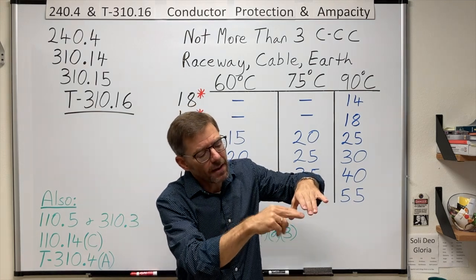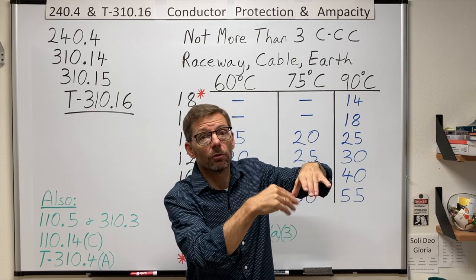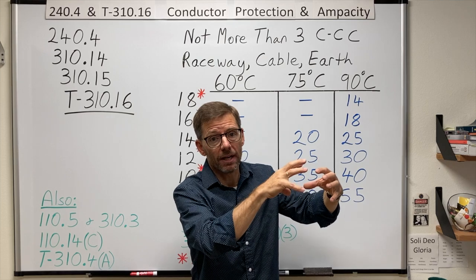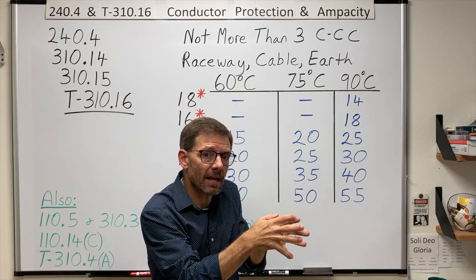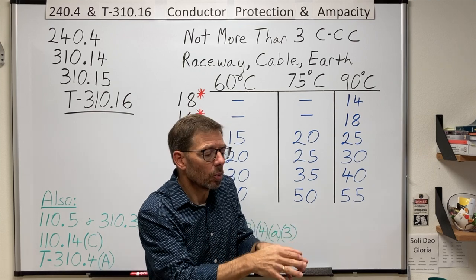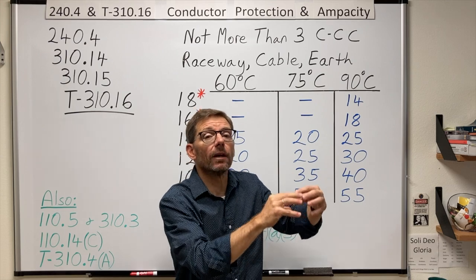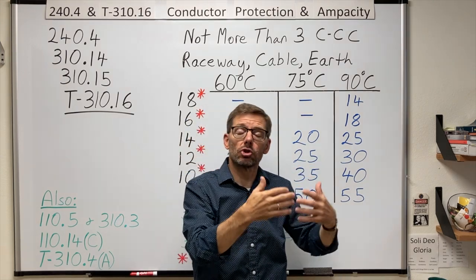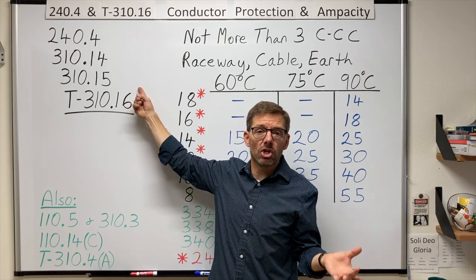So instead of having all those conductors at their top ampacity, and then they're kind of mutually heating each other up past their insulation ratings, we take all those conductors and restrict their ampacities. And so when they run at their new limits, sure, they heat each other up, but they don't get over their temperature ratings. In C, that's referred to as ampacity adjustment.